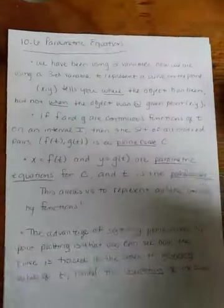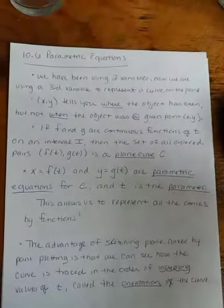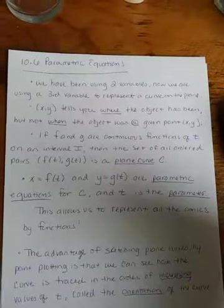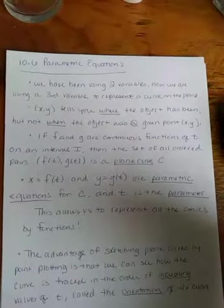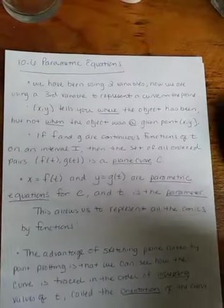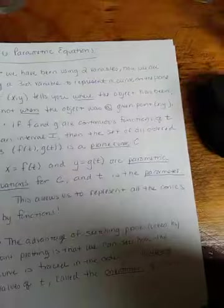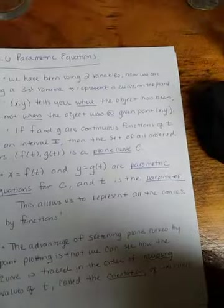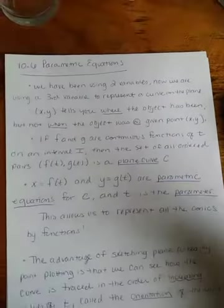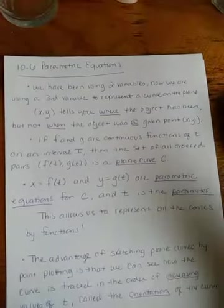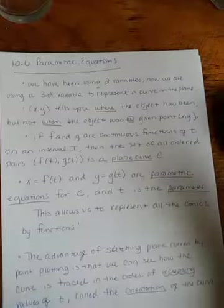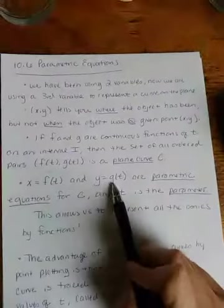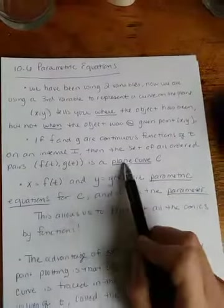So here I am, me, crazy me, writing out all our notes. This actually isn't going to be a long lesson if I just get to it here. Alright, so we've been using two variables, and now we're using a third variable to represent a curve on the plane. XY, the point XY, tells you where the object has been, but not when the object was at a given point. So basically we're looking at equations that tell us position, direction, and potentially speed at a given time. So, what is a parametric equation?